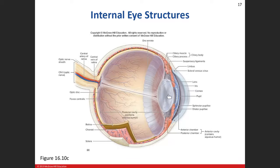This is important because we're going to talk about the aqueous humor, which is the fluid that circulates through this area and helps to oxygenate and bathe the structures of the lens and cornea.